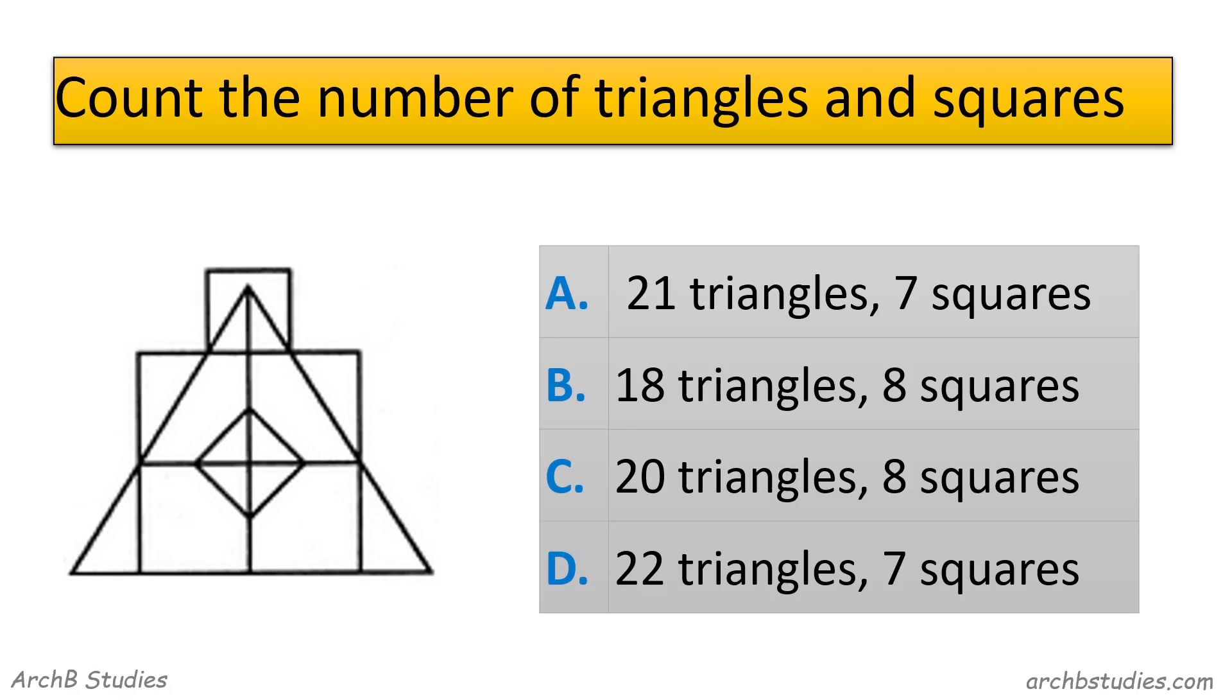So next question is count the number of triangles and squares. So first let's see triangles. So inside one, 1, 2, 3, 4, 5, 6, 7, 8. So 8, okay. Now in the big one, 1, 2, 3, 4, 5. 1, 2, 3, 4, 5, 6, 7, 8, 9. So 9 over here.